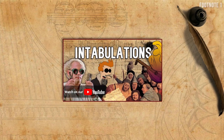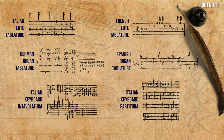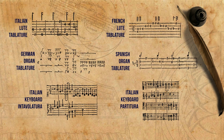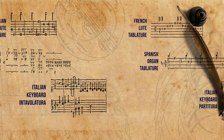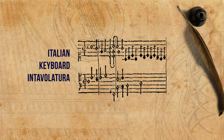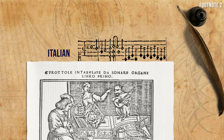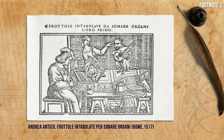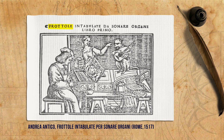In an episode dedicated to the concept of intabulations in general, we presented the different notation systems used for different instruments in different places. On this occasion, we will focus on the Italian keyboard intavolatura. Probably the earliest publication of music with this notation system is from 1517, and it consists of intabulations of frottole — popular secular songs predating the slightly more serious madrigal genre.